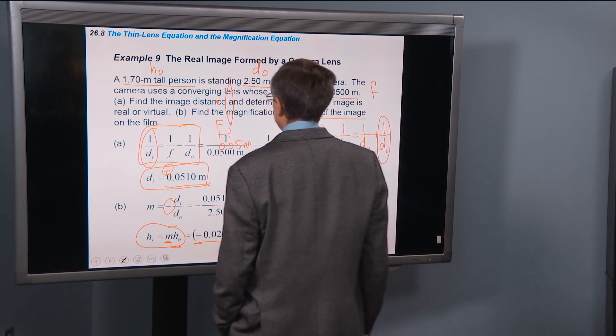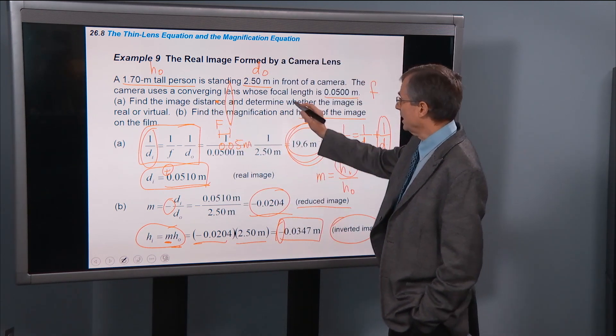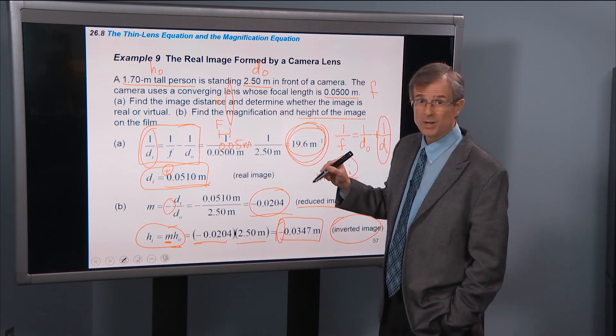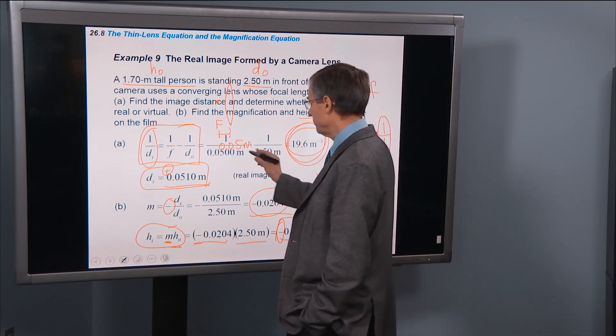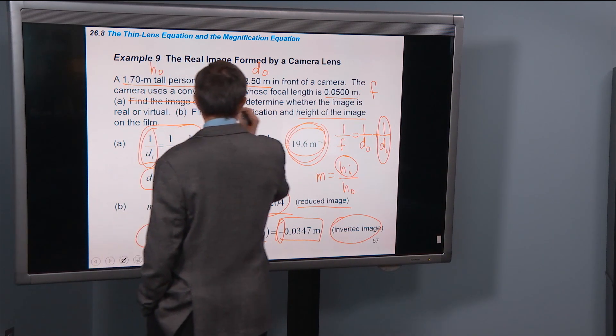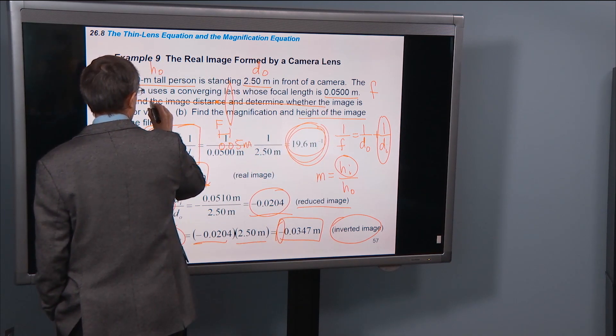The object, the person, which is the object, is standing 2.5 meters in front of the camera. Well, that's a lot bigger than 0.05. So this object is going to be way out here.